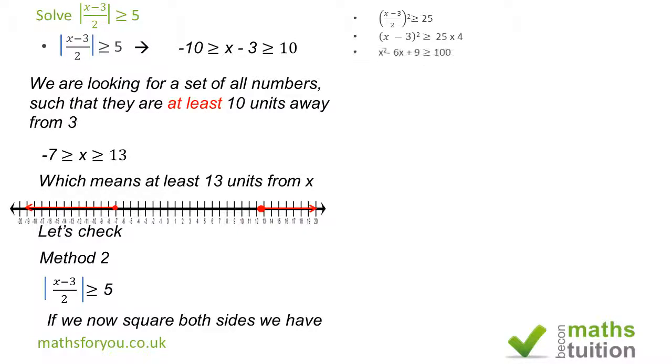We open up our bracket, and we have x squared minus 6x plus 9 is greater than or equal to 100. Subtract 100 from both sides, we have that x squared minus 6x minus 91 is greater than or equal to 0. And when we factorize, we have that (x plus 7) into (x minus 13) is greater than or equal to 0.